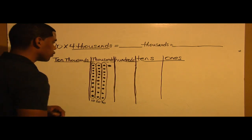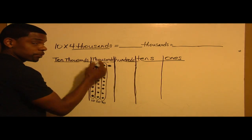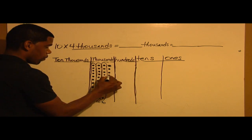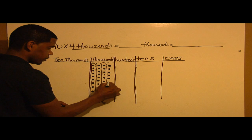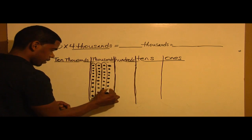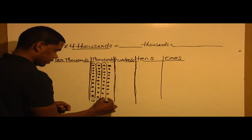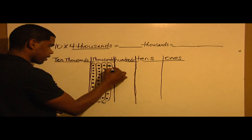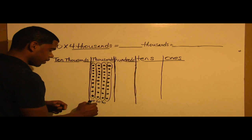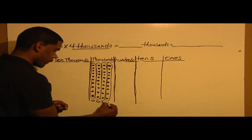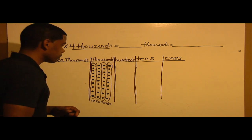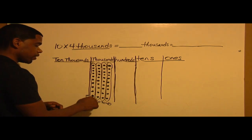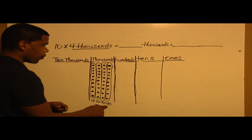Now I have 1 more group, and I would do the same steps: 1, 2, 3, 4, 5, 6, 7, 8, 9, 10. This concludes my fourth group of the thousands. Now I have 10, 20, 30, 40,000. So 4 groups of 1,000 with a multiple of 10 in each group makes 40,000.